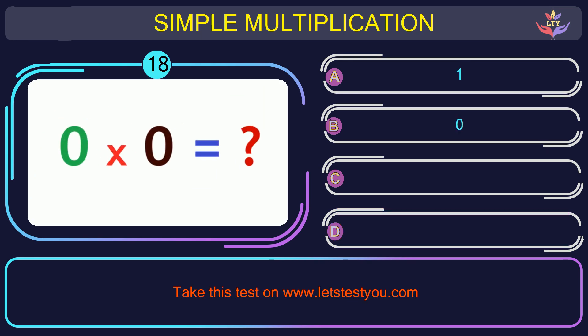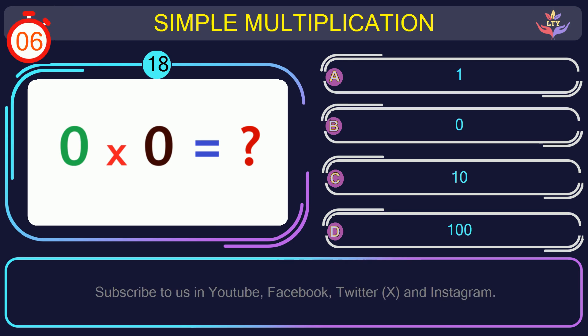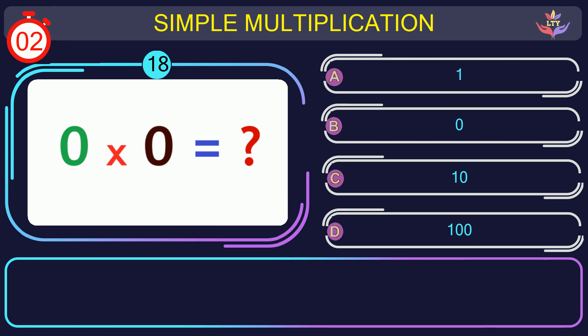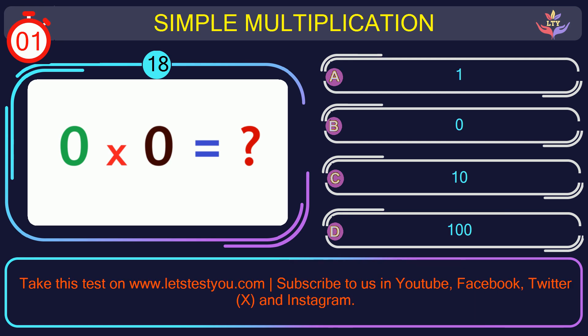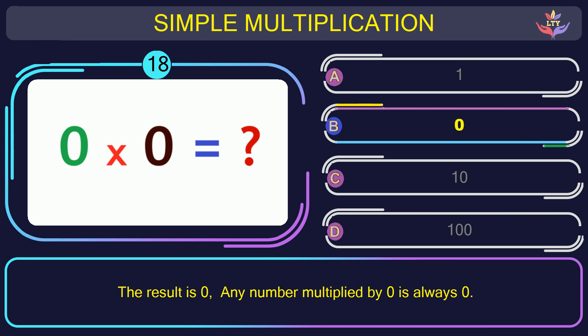Question number 18: calculate the result when you multiply 0 and 0. The correct answer is option B: 0. The result is 0. Any number multiplied by 0 is always 0.